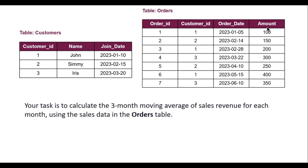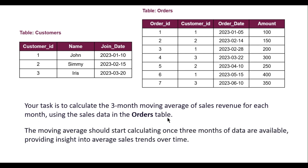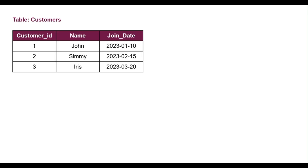You have to calculate the three-month moving average of sales revenue for each month using the sales data in the orders table. The moving average should start calculating once three months of data are available, providing insight into average sales trends over time. Let's take a look at the input table and output table.